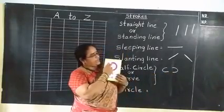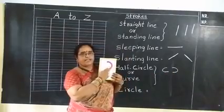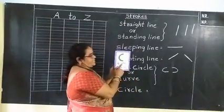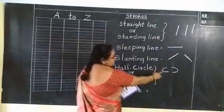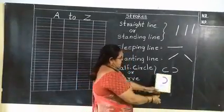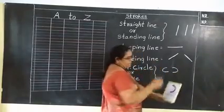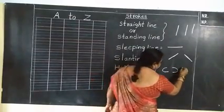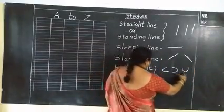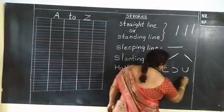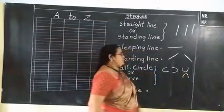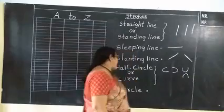Left half circle will be like this. This is right half circle and this is left half circle. This is up curve. What is this? Up curve. And this is down curve. What is this? Down curve. Up curve and down curve.